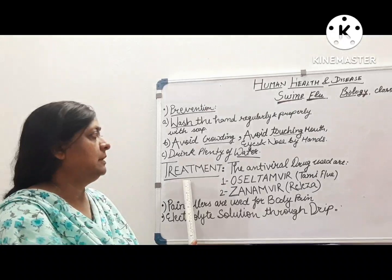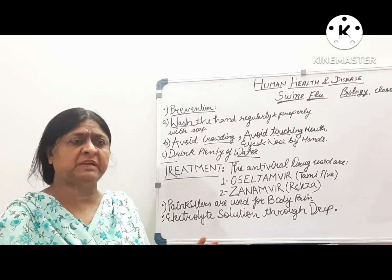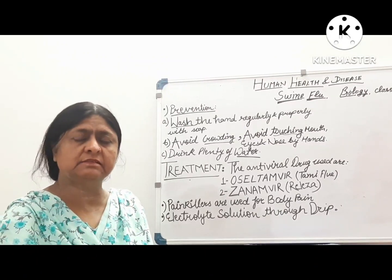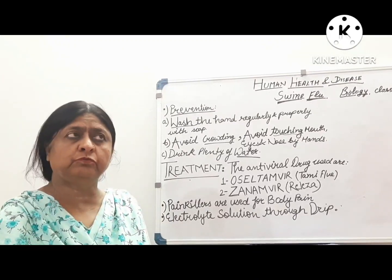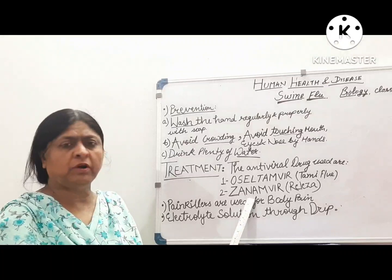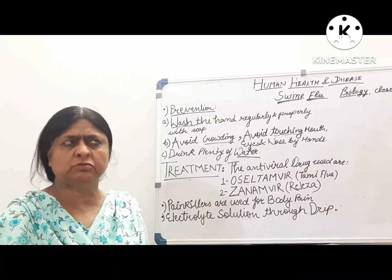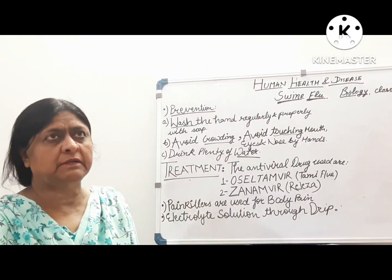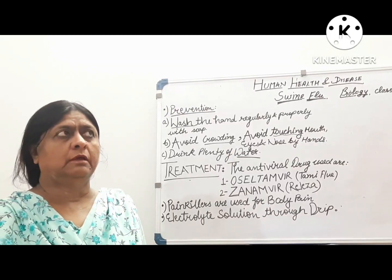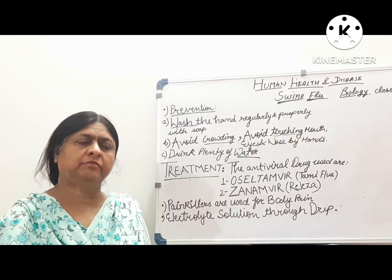For treatment, there are two medicines suggested: the first is oseltamivir and the second is zanamivir. There is a special condition: if swine flu is reported by the doctor or by pathological test in early stages within 24 to 48 hours, then doctors can control the disease, otherwise it becomes fatal. For body pain, doctors generally use painkillers. For electrolyte supplementation, a drip is used to infuse liquid into the body. The main thing is to control the disease early. It becomes fatal in severe conditions, so we should keep our hygiene at the best level to save ourselves from these dangerous diseases.